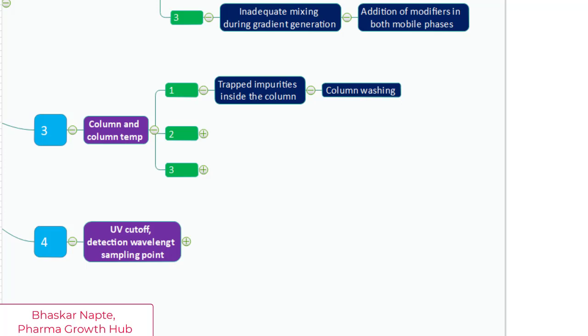You must have seen that in case of this column frit getting choked with salt precipitation, your peak shape can also get deteriorated. So follow the column manufacturer's recommendation to clean the column. Or in case it is not possible to clean the column, you can replace it with another column. The reverse washing of the column can help you to remove the frit contamination very effectively.